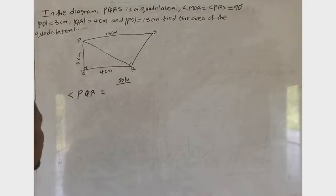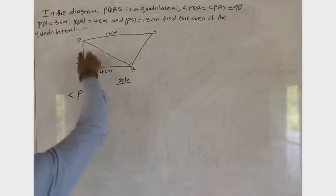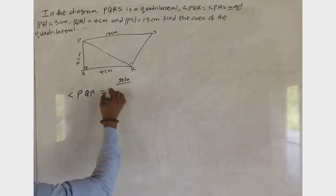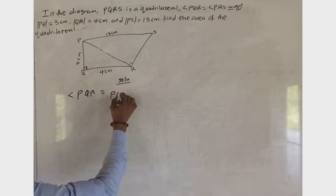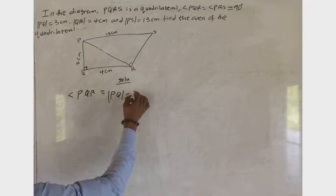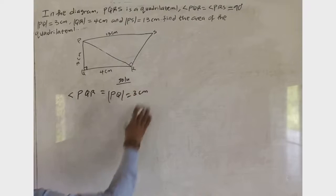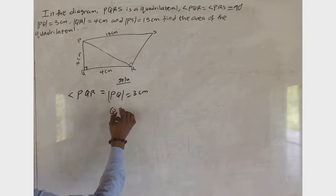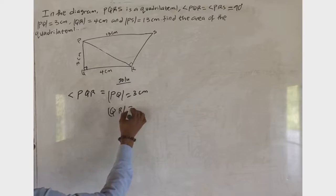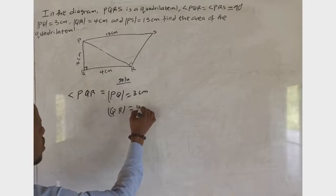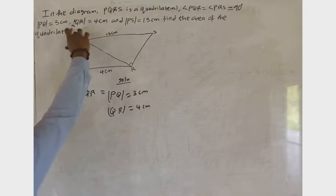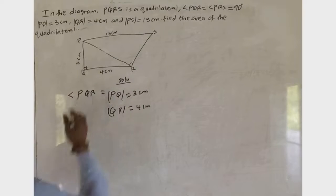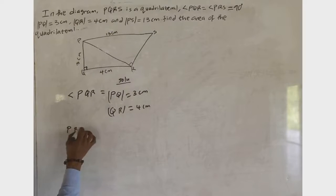Looking at triangle PQR, we are given side PQ as 3 cm and side QR as 4 cm. For the second triangle, triangle PRS, we need to work out the missing sides.